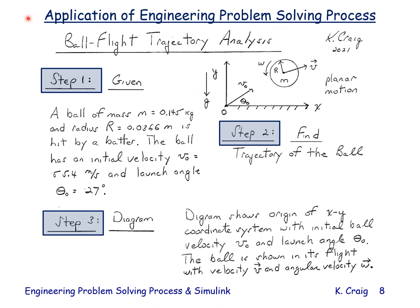In order to solve this problem for ourselves, we apply the engineering problem solving process — this is ball flight trajectory analysis. Step one, state the given information: a ball of mass m = 0.145 kg (a baseball weighs five ounces) and radius r = 0.0366 meters is hit by a batter. The ball has an initial velocity v₀ = 55.4 meters per second and a launch angle of 27 degrees.